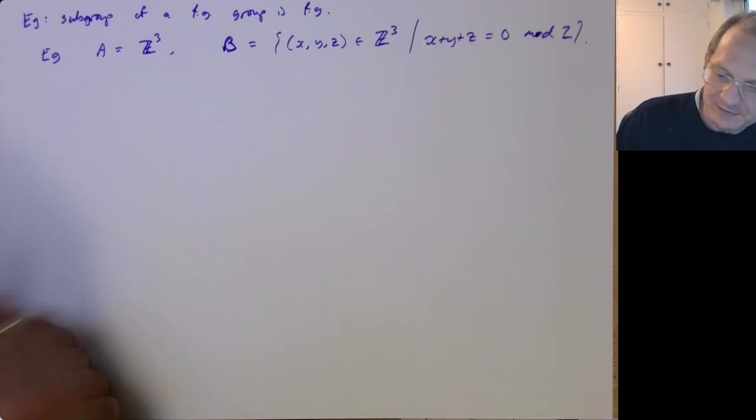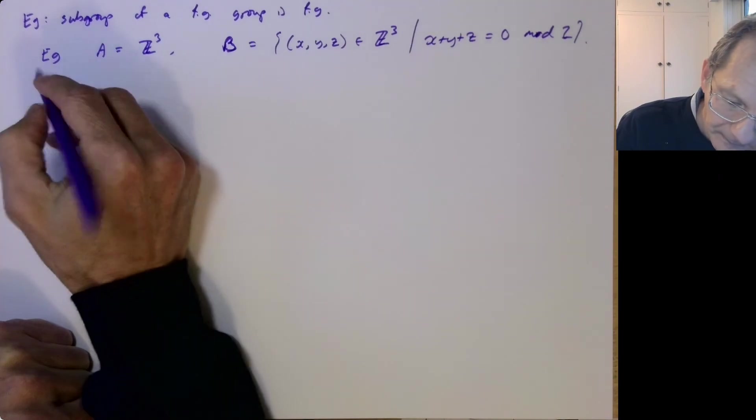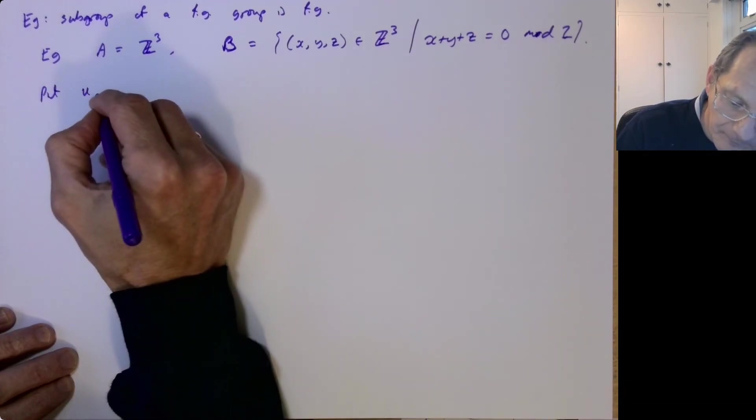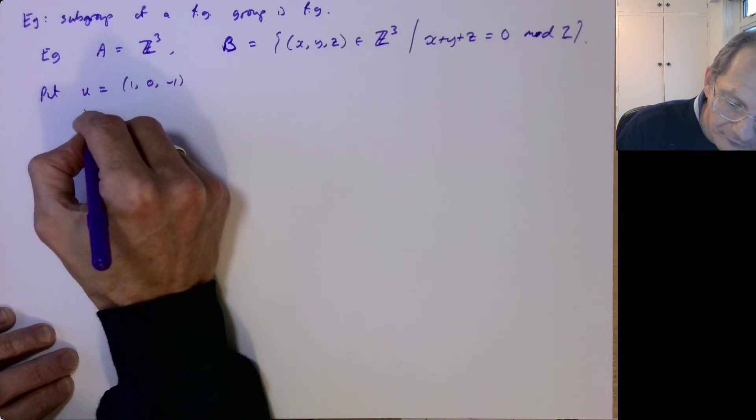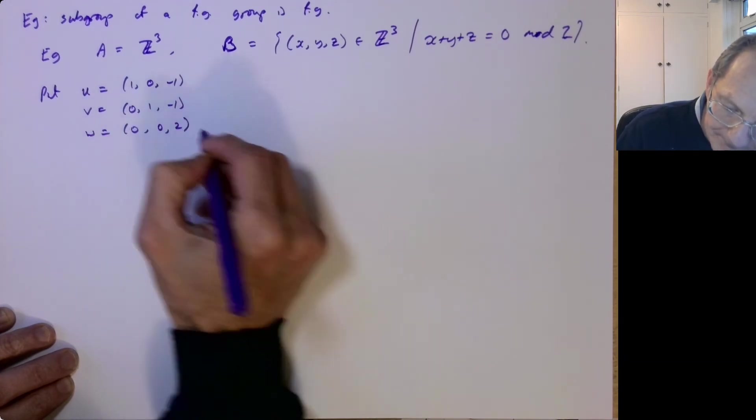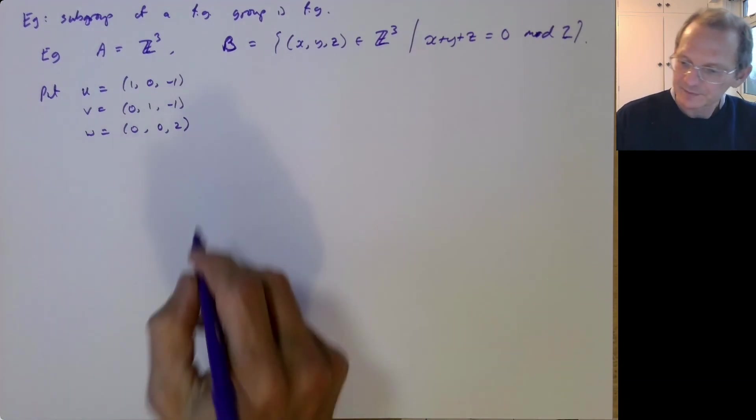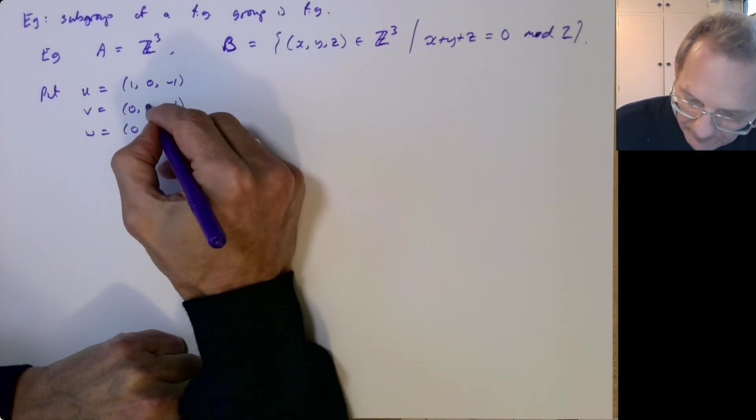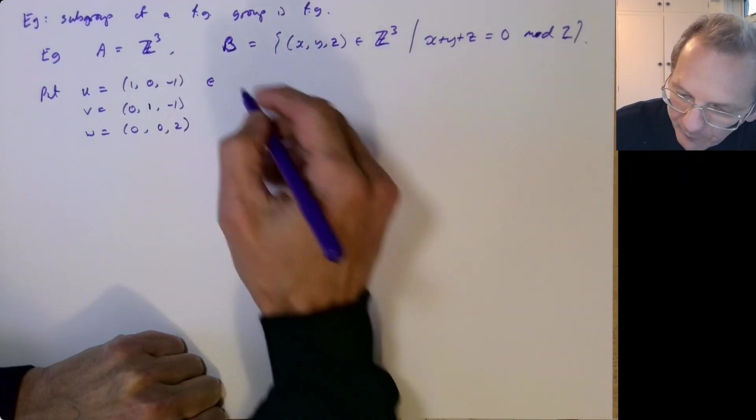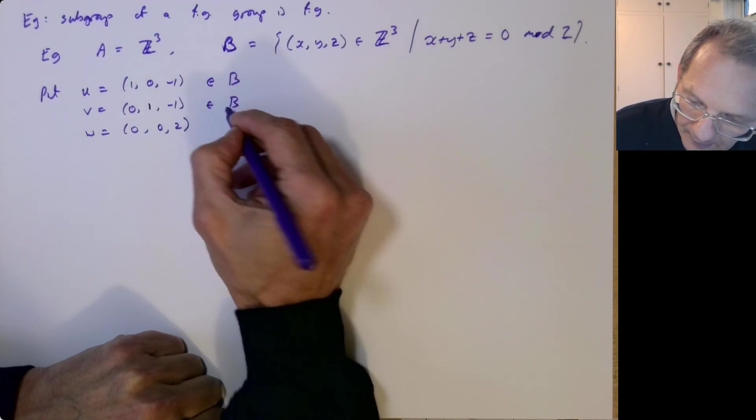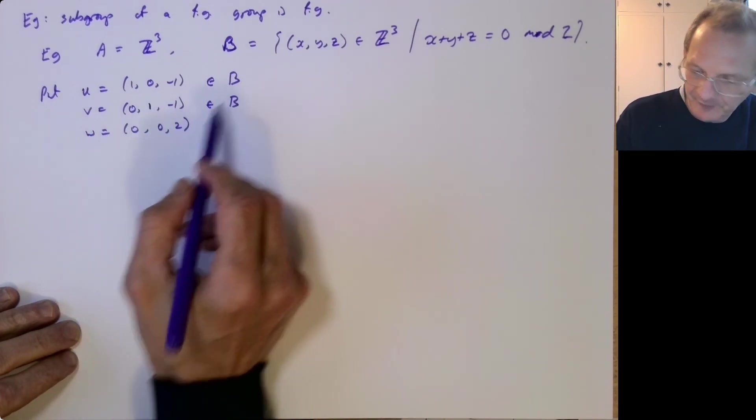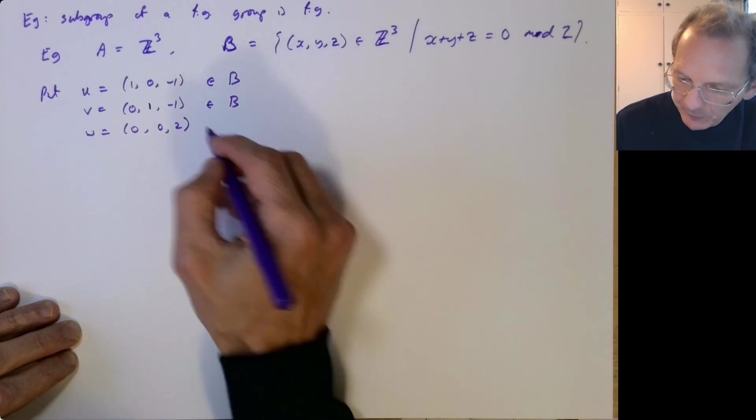So it ought to be finitely generated. So let's just try and find some finite generators for this subgroup. So let's put U is 1, 0, minus 1. V is 0, 1, minus 1. W is 0, 0, 2. So here, if we look at the sum of the three entries, obviously you get 0. So that's in B. And this V, here the sum of the three entries again is 0, so that's in B. And for W, the sum of the three entries is 2, which is 0 mod 2, so that's in B.